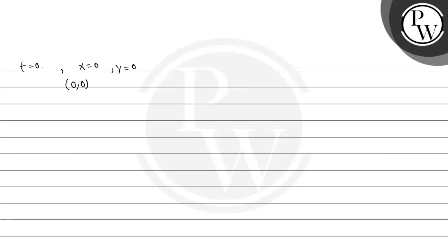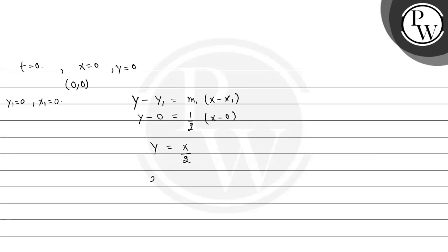Equation of tangent: using y − y₁ = m₁(x − x₁), with x₁ = 0, y₁ = 0, and m₁ = 1/2: y − 0 = (1/2)(x − 0), which gives y = x/2, or equivalently 2y − x = 0.